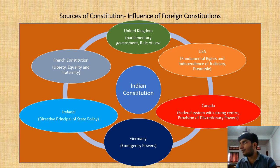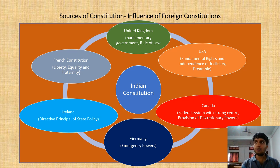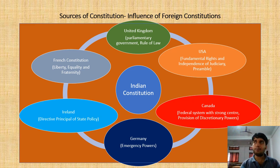The Constitution took inspiration from a number of sources. Legal experts like B. N. Seervai Rau had traveled extensively to different countries and gathered data on the working of different constitutions. From the United Kingdom, since Britain ruled over us, we took the parliamentary system of government and the rule of law. From the USA, we took the idea of fundamental rights, independence of the judiciary, and the Preamble.